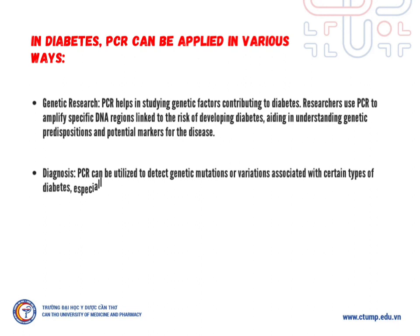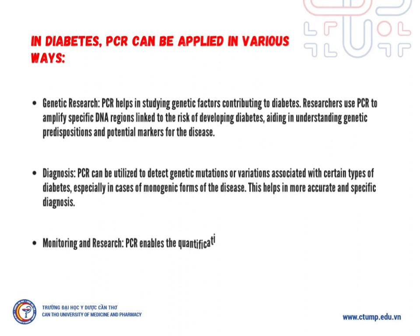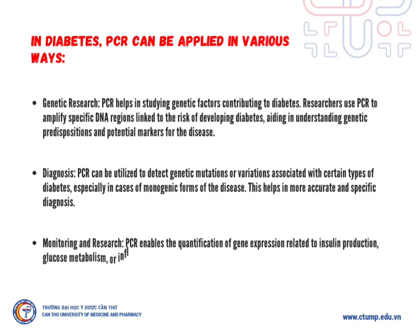Diagnosis: PCR can be utilized to detect genetic mutations or variations associated with certain types of diabetes, especially in cases of monogenic forms of the disease. This helps in more accurate and specific diagnosis.